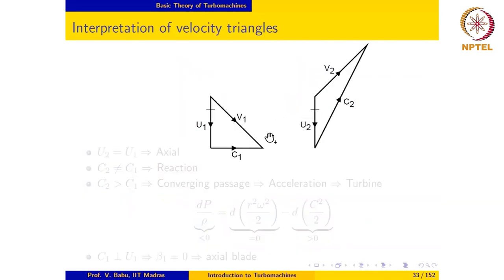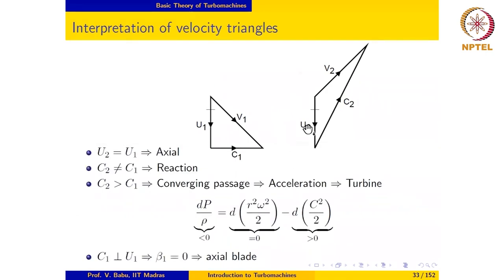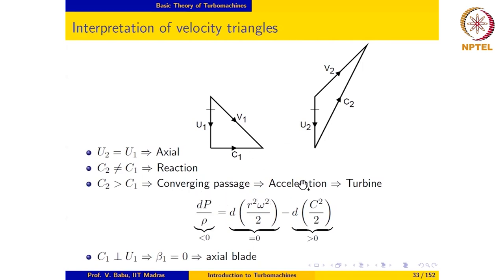Here we are given a velocity triangle at the inlet and exit to the rotor. It is given that U1 is equal to U2, which means this is an axial machine. It is also clear from the velocity triangle that C2 is not equal to C1, which means it is a reaction machine. DR is 0 because it is an axial machine, and C2 is greater than C1, so DC is positive. That means this term contributes negatively to the DP term, so DP is less than 0, meaning the pressure decreases in this passage. C2 greater than C1 implies that the blade passage is a converging passage — the flow accelerates and pressure decreases. Therefore, this is the rotor blade of a turbine.